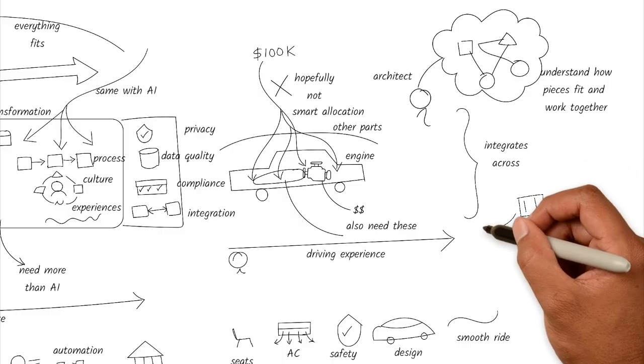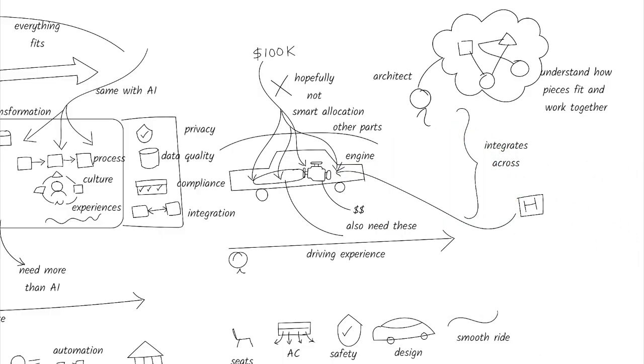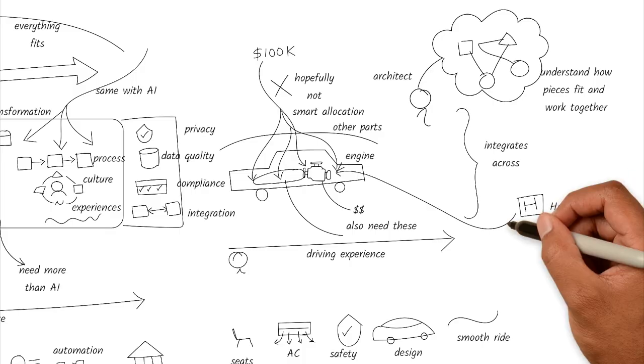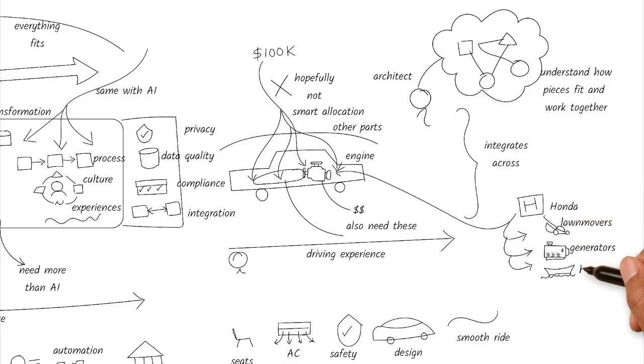Now, here's another layer to the engine analogy. Companies like Honda specialize in making engines. But those engines don't just go into cars. They're also found in lawnmowers, generators, and even boats.